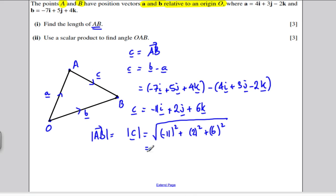So minus 11 squared is 121 positive, plus 4, plus 36, and you get the square root of 161. And you can't simplify that. So the length of AB, the length of AB is the square root of 161.